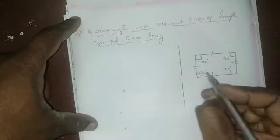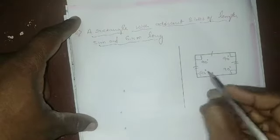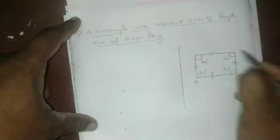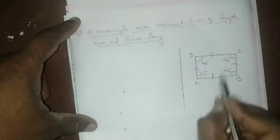Now I will name the rectangle. I will label the vertices as A, B, C, D.